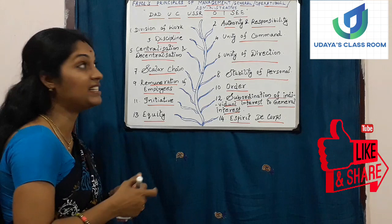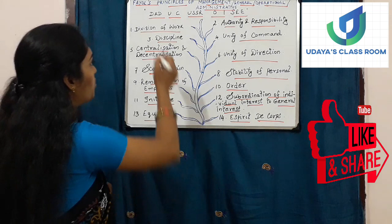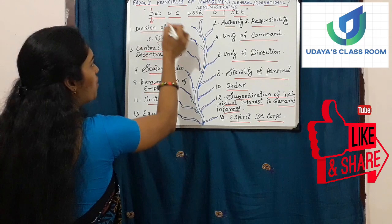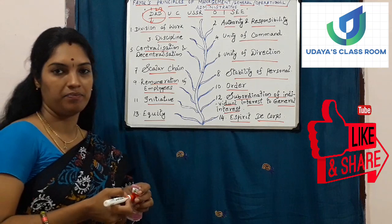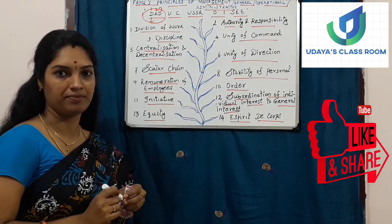The fourteenth principle is Esprit de Corps — this is actually a French term, as Fayol was from France. Each letter of the mnemonic represents one principle. Today we are going to discuss only the first three principles — Division of Work, Authority and Responsibility, and Discipline.